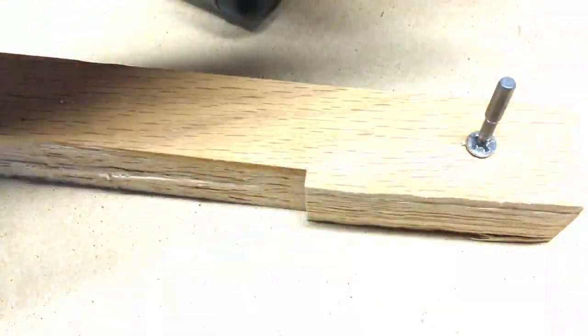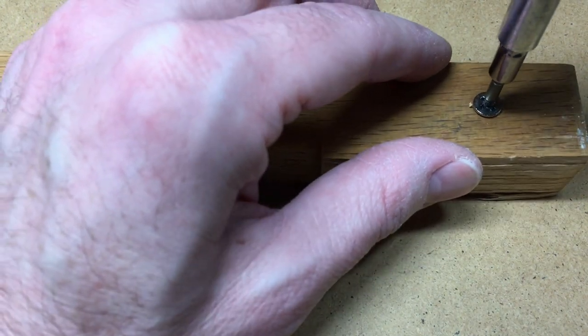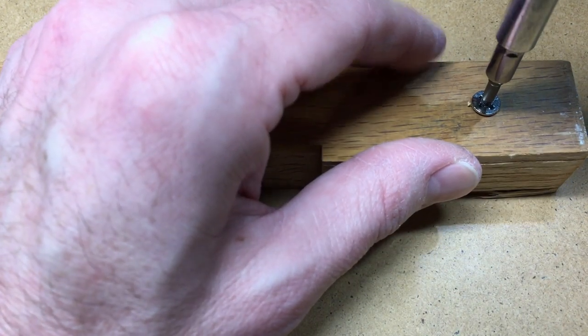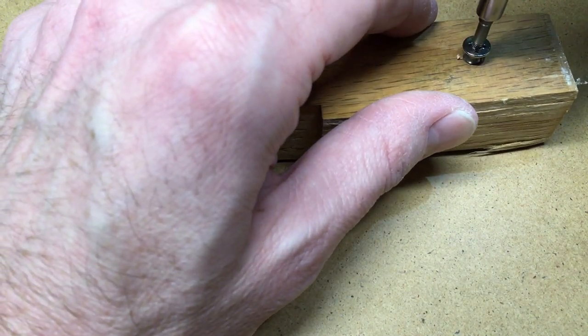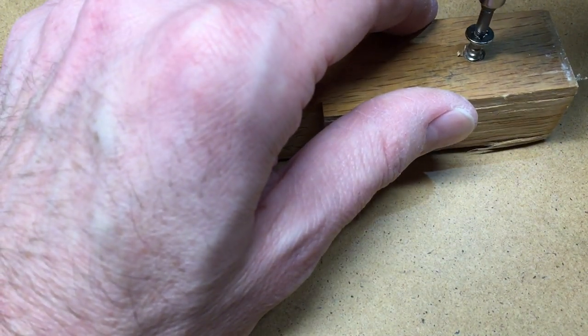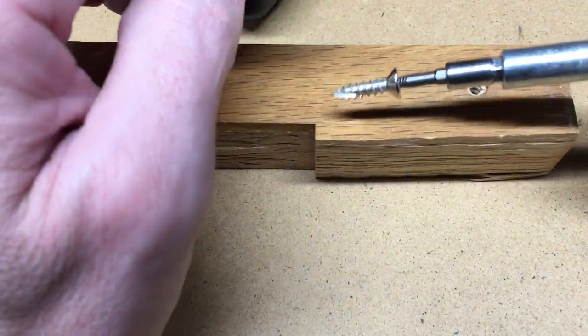I think that's going to grab. So now I'll stick the extractor in. I have this on reverse and it should grab. There we go. There we go, and we have the screw out.